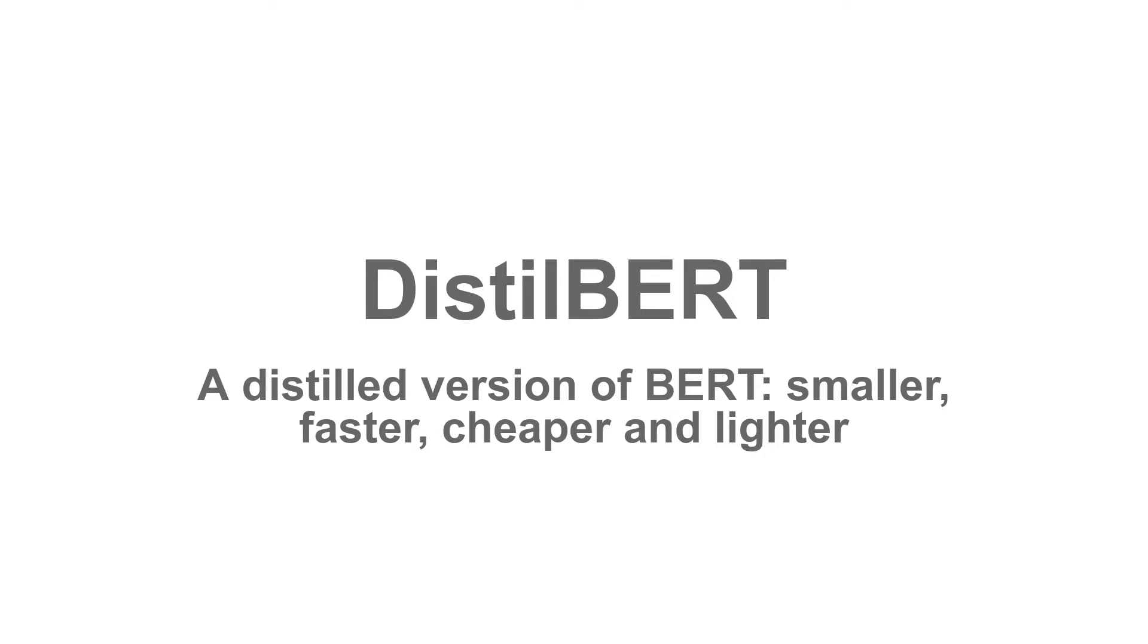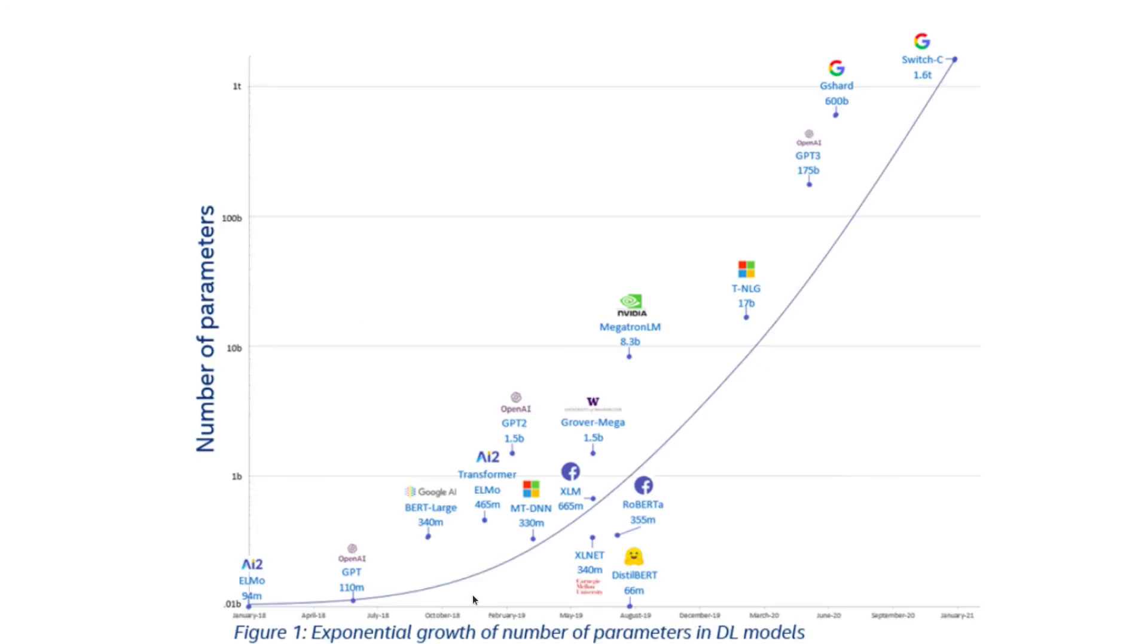Let's go back to the graph where we could see the number of parameters of different models. Look at DistilBERT, which is sitting right here, 66 million parameters. It's basically telling us that good language models need not be ridiculously huge.